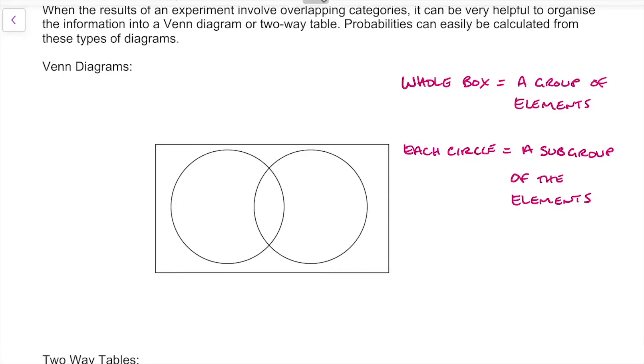The outside part of the circle, that's the bit that's inside the box but outside the circle, is the subgroup of elements that are not included in the main subgroups.